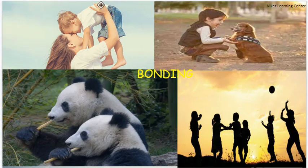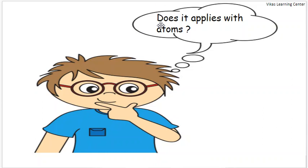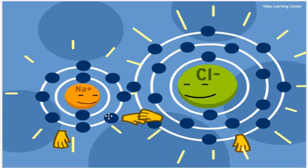In nature, each one of us likes to be with someone, and that is what we call bonding. Does it apply with atoms as well? Do atoms like to combine with one another? The answer is yes. Atoms do like to combine with one another. So, why do atoms combine with one another? Atoms combine with one another in order to attain stability.